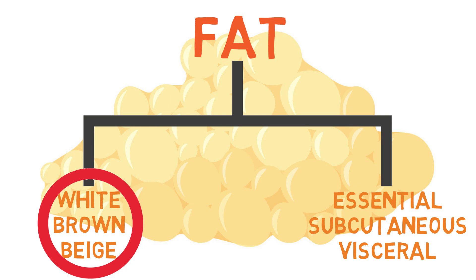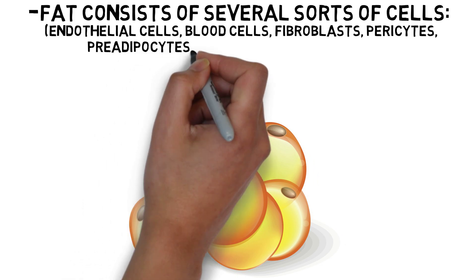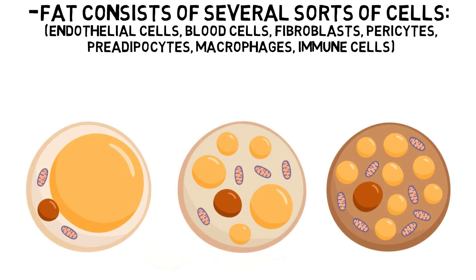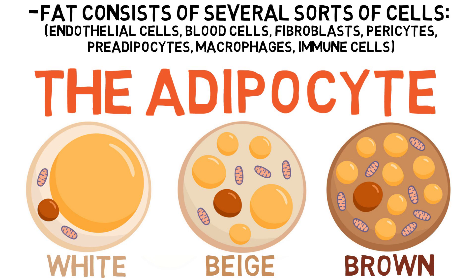Fat is actually made up of a variety of cells, such as endothelial cells, blood cells, fibroblasts, pericytes, pre-adipocytes, macrophages, and immune cells. But the type of fat cell referred to as either white, brown, or beige is the adipocyte. These are the cells responsible for fat storage. So when you hear people refer to fat as white, brown, or beige, they're really referring to whatever type of adipocyte is most apparent in a given area of fat.